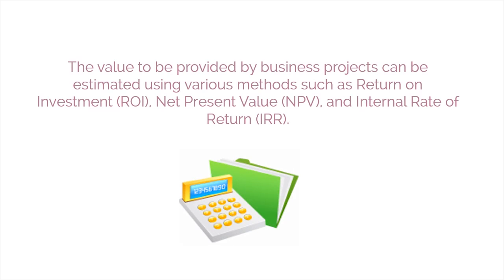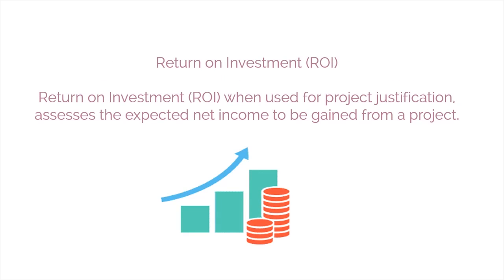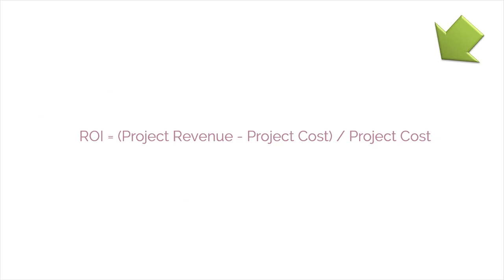The value to be provided by business projects can be estimated using various methods such as return on investment, net present value, and internal rate of return. The first method we are going to learn is return on investment. Return on investment, when used for project justification, assesses the expected net income to be gained from a project. Return on investment equals project revenue minus project cost, divided by project cost.